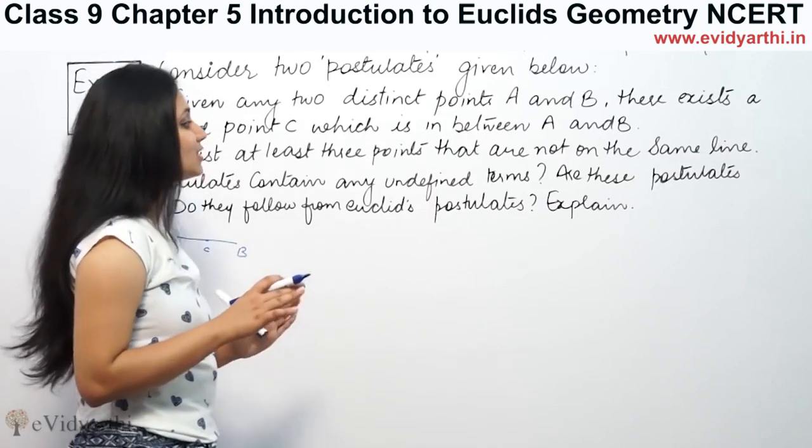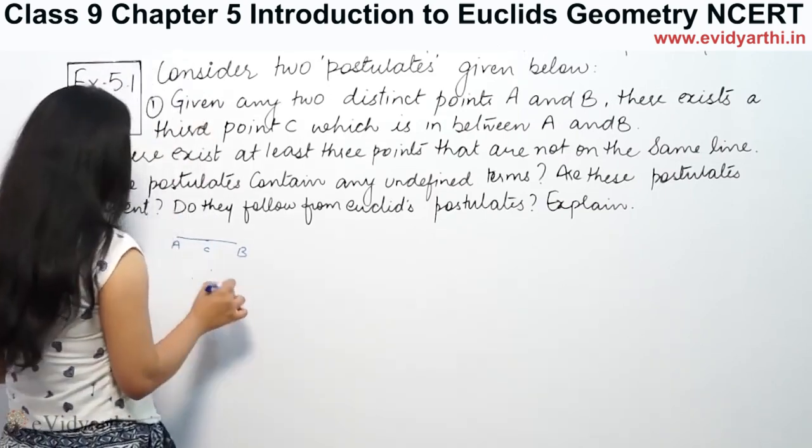Secondly, there exist at least three points that are not on the same line. Three points are not on the same line.